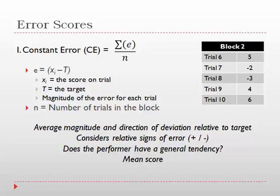To calculate the constant error score for block 2, what we would have to do is add all of the error scores in block 2 and then divide it by the number of trials. If you were to do this, you would end up with a score of 2.2. I didn't put any units on here, but we could say that these error scores are in inches, for example, inches away from the target.